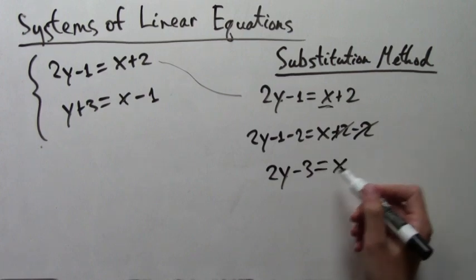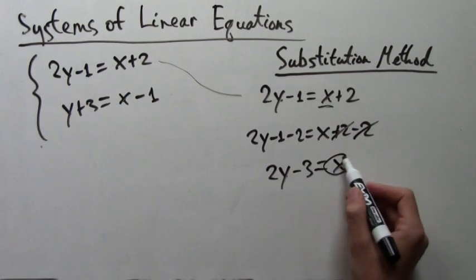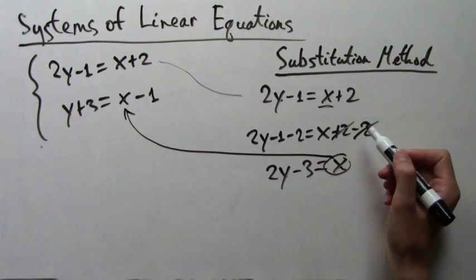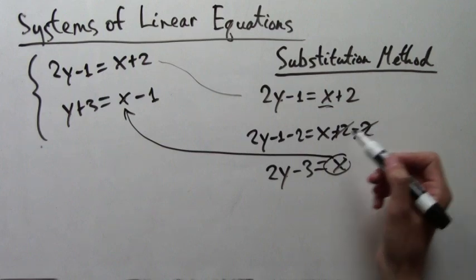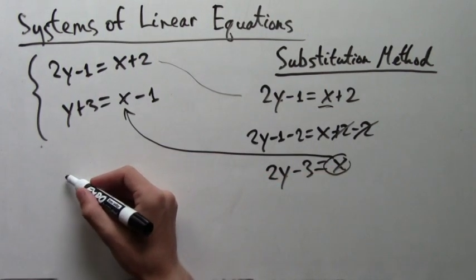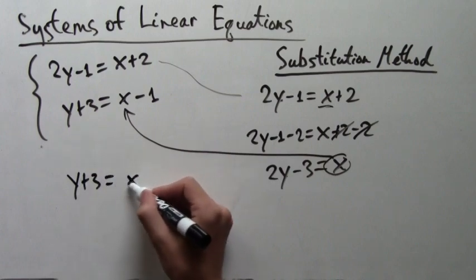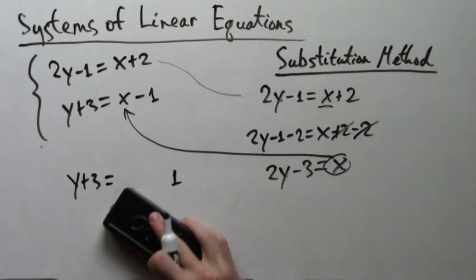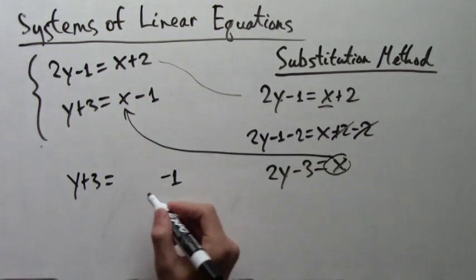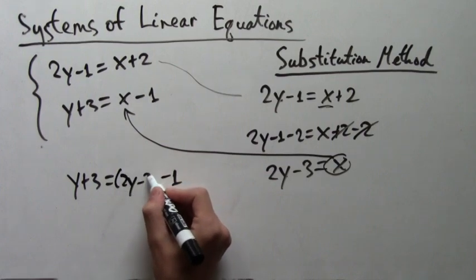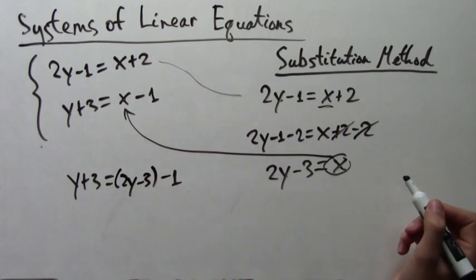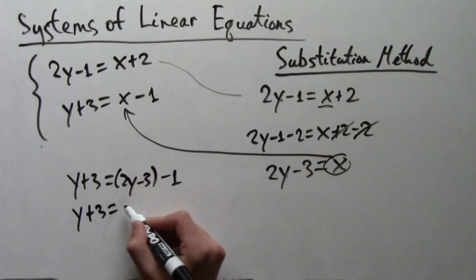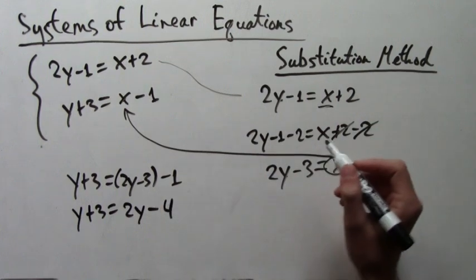Now that's not a number, but now that we know what x is in terms of y, we can plug that into the second equation instead of the x. So when we do that, the second equation turns into y plus 3 equals 2y or x minus 1. But we replace the x, and we get 2y minus 3 minus 1. So now we have just one equation and one variable. This variable is y. And we know how to solve these already. We just isolate the variable.